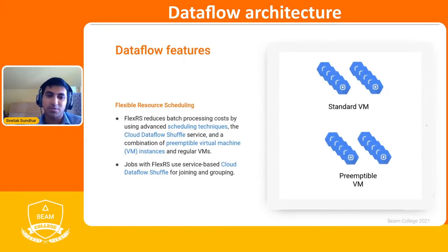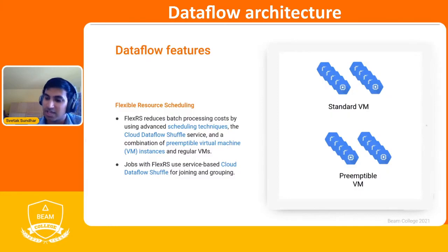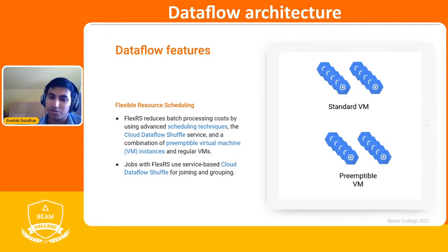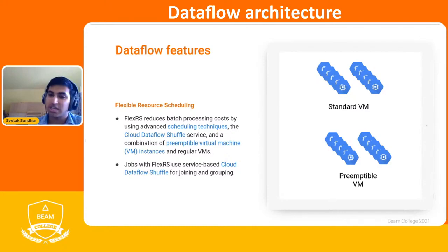Another feature is flexible resource scheduling. We have standard VMs, but also preemptible VMs, which are short-lived and can shut down after a period of 24 hours — they're ephemeral. The idea is to use a combination of standard and preemptible VMs, so even if the preemptible VMs go down, other VMs continue working on the job. This is useful from a resource management standpoint — your overall compute bills come down since you're not running standard VMs all the time.